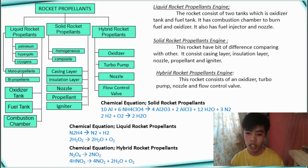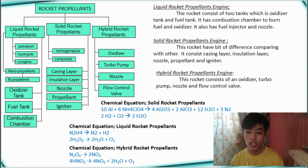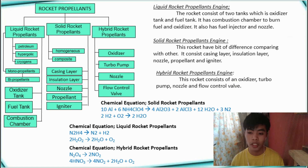Hybrid rocket propellants in general. The rocket consists of an oxidizer, turbo pump, nozzle, and flow control valve. The chemical equations shown here represent only a few of the chemicals used to develop these different kinds of rockets.